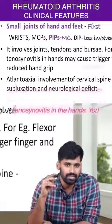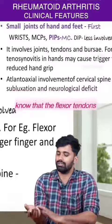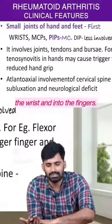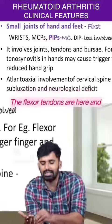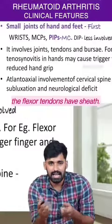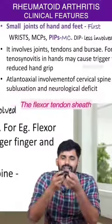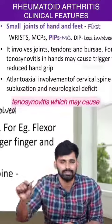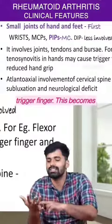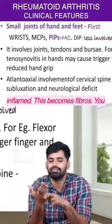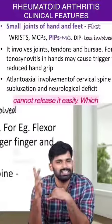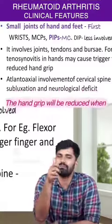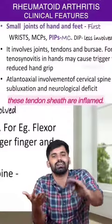For example, flexor tenosynovitis in the hands. The flexor tendons travel from the elbow down into the wrist and into the fingers, and these tendons have a sheath. The flexor tendon sheaths become inflamed, causing flexor tenosynovitis, which may cause trigger finger — the sheath becomes inflamed and fibrous, and you cannot release it easily, like holding the trigger of a gun. The hand grip will be reduced when these tendon sheaths are inflamed.